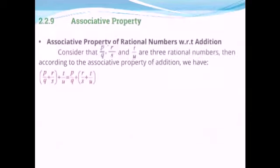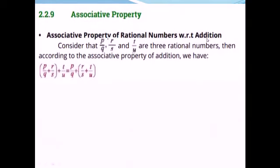The first is the associative property of rational numbers with respect to addition. Consider that P/Q, R/S, and T/U are three rational numbers. Then according to the associative property of addition, we have (P/Q + R/S) + T/U = P/Q + (R/S + T/U). In commutative property you have two rational numbers, and in associative property you have three rational numbers. The order of numbers is the same on both sides.